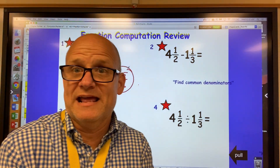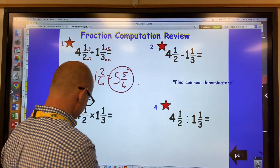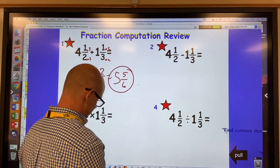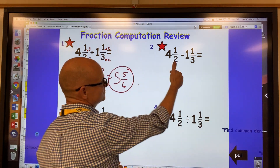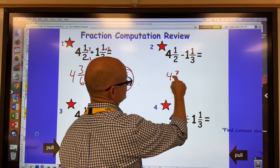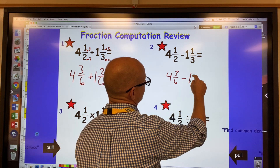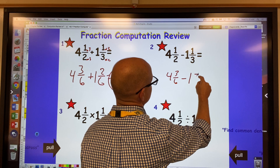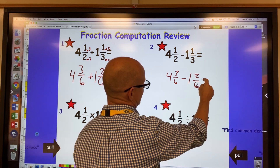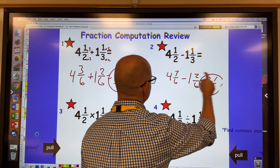If you got that, you remember how to add fractions with unlike denominators. Same thing for subtraction: I change the fractions to sixths — this becomes four and three-sixths, and this becomes one and two-sixths — then I subtract and get three and one-sixth. If you got both of these right, you remember how to add and subtract fractions with unlike denominators.